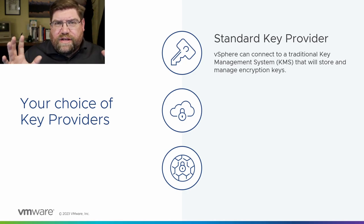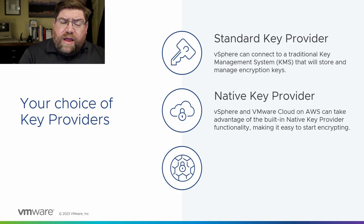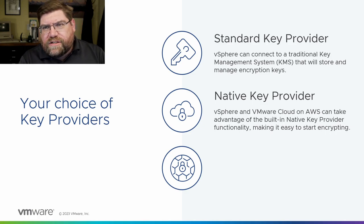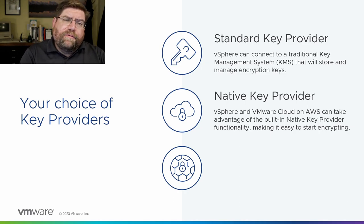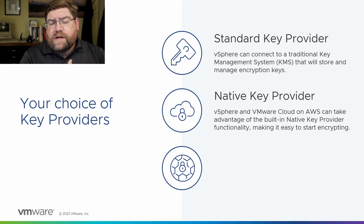We asked customers: why aren't you turning on VM encryption? Why aren't you using these features? A lot of them said it's hard — that extra complexity, maybe political stuff in organizations — they said it would be great if vSphere could just take care of this stuff. And so in vSphere 7, we built the native key provider. You can turn it on and create a native key provider instance, and then start doing VM encryption, vTPMs, vSAN encryption — all of that stuff. Very powerful.